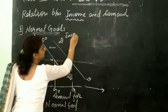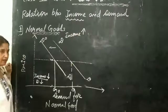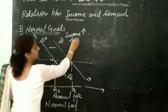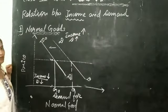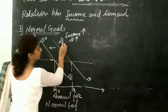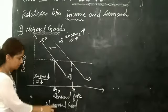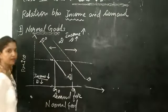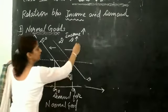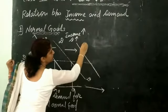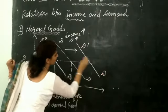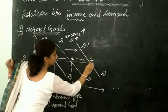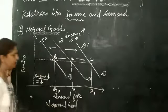On the other hand, if the income of the consumer increases, the consumer can demand more commodities. Since these are normal goods, the demand curve shifts forward — the new demand curve is D-D dash — and the consumer moves towards point C, where the demand for the commodity is Q1.